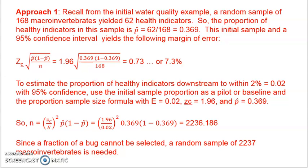So 62 healthy indicators out of 168 sample size macroinvertebrates. So the proportion of macroinvertebrates in the sample, p-hat, is equal to 62 over 168 or 0.369.